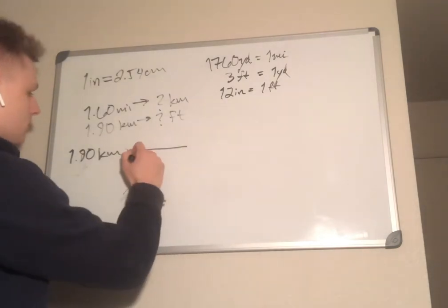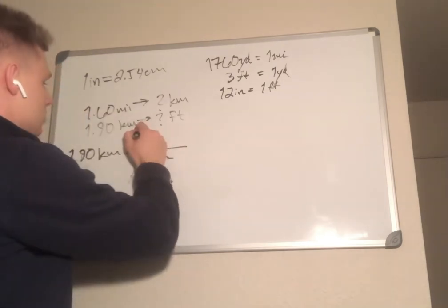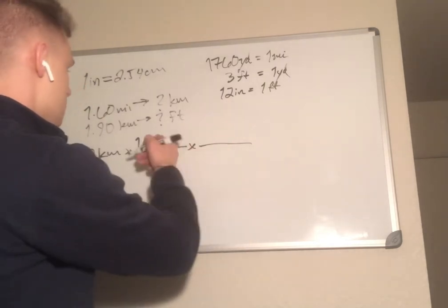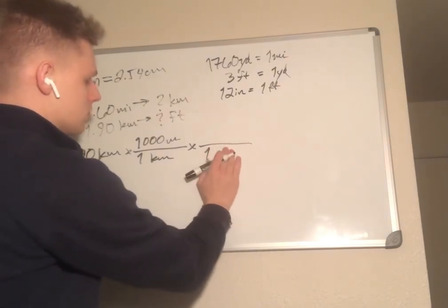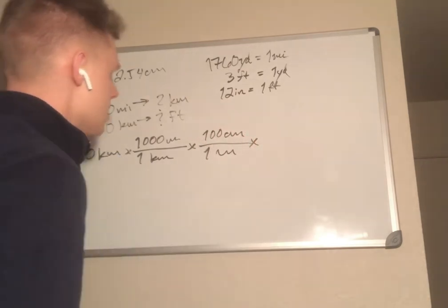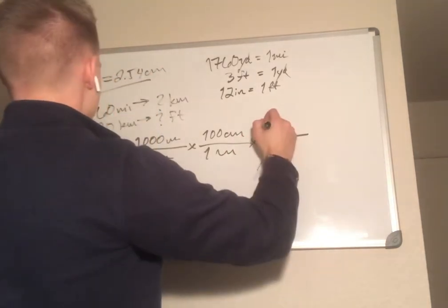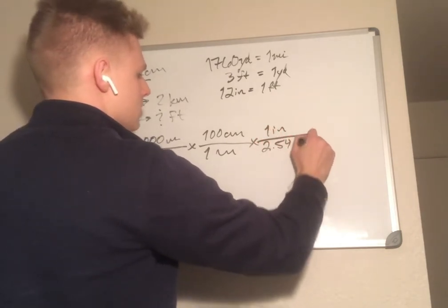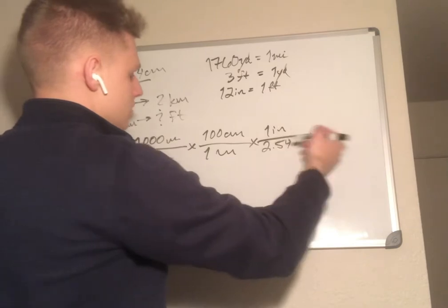We'll use: one kilometer over 1000 meters, times 100 centimeters over one meter. Then from centimeters we use the given conversion — one inch over 2.54 centimeters. Then from inches to feet: 12 inches in a foot, so we put 12 inches on the bottom and one foot on top.